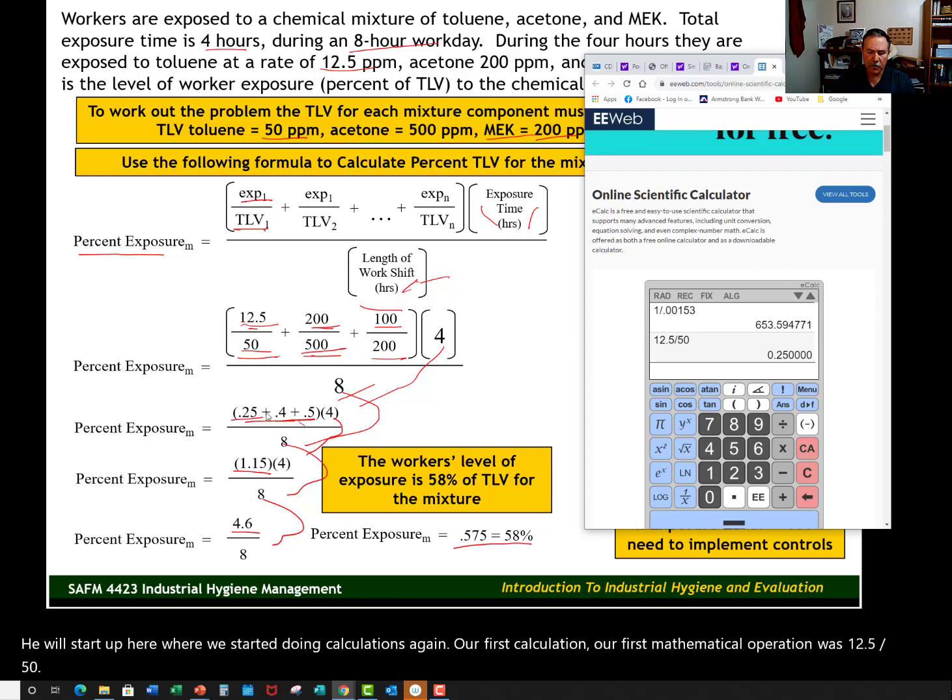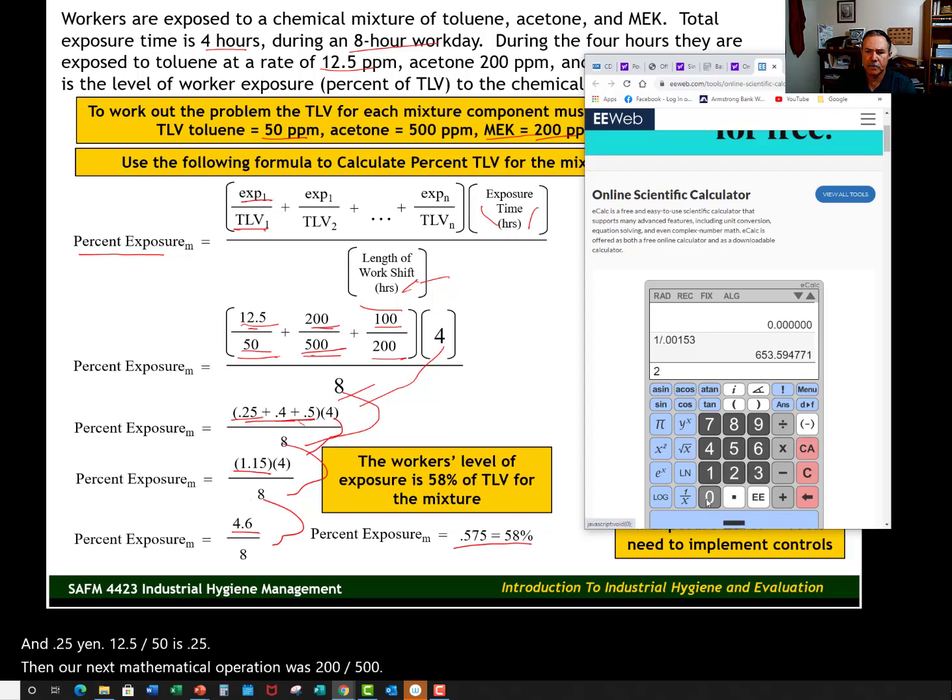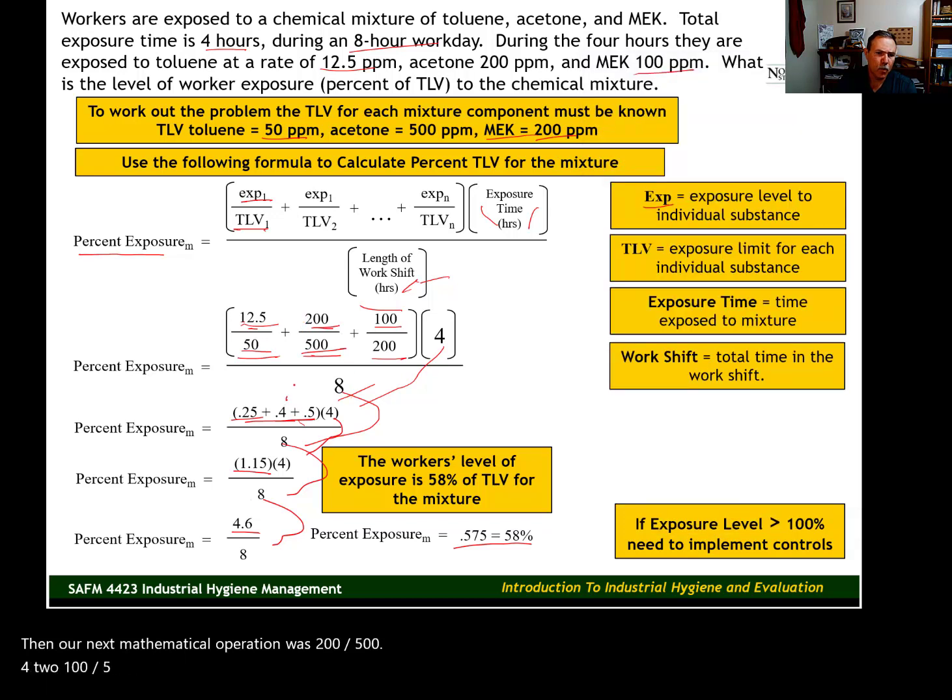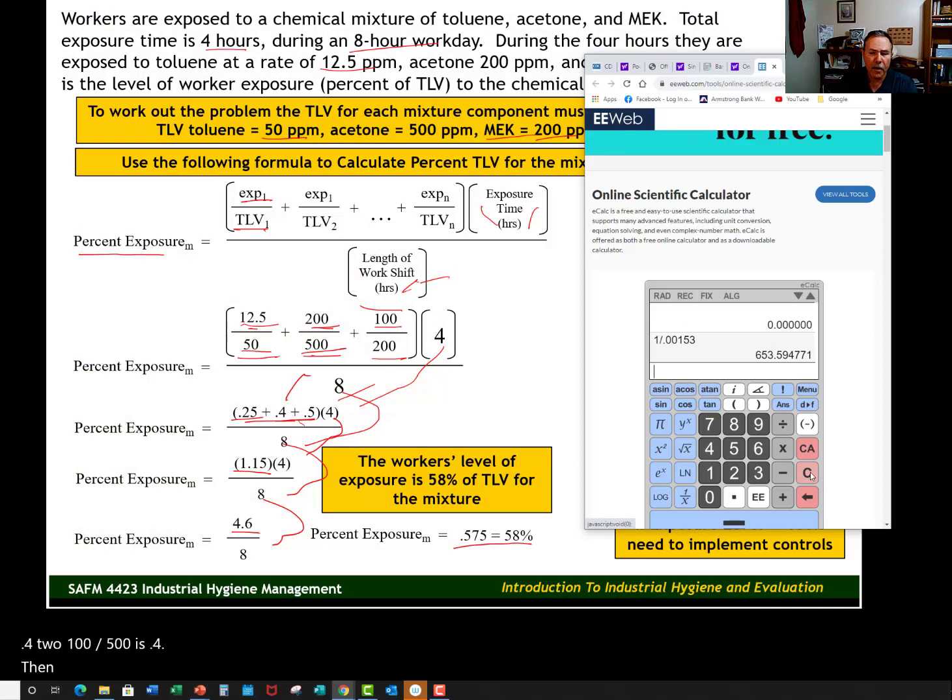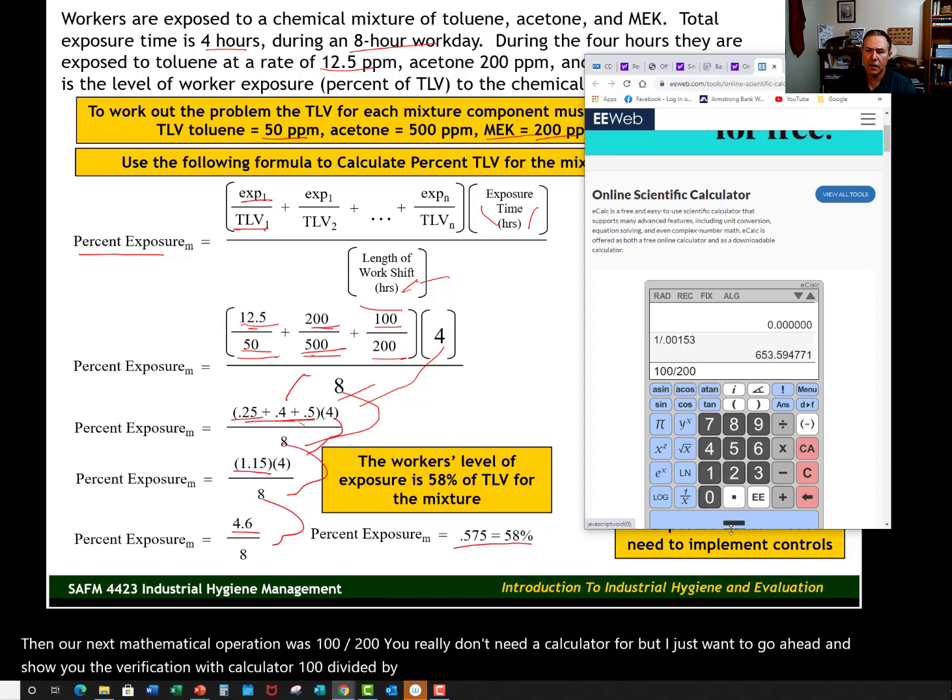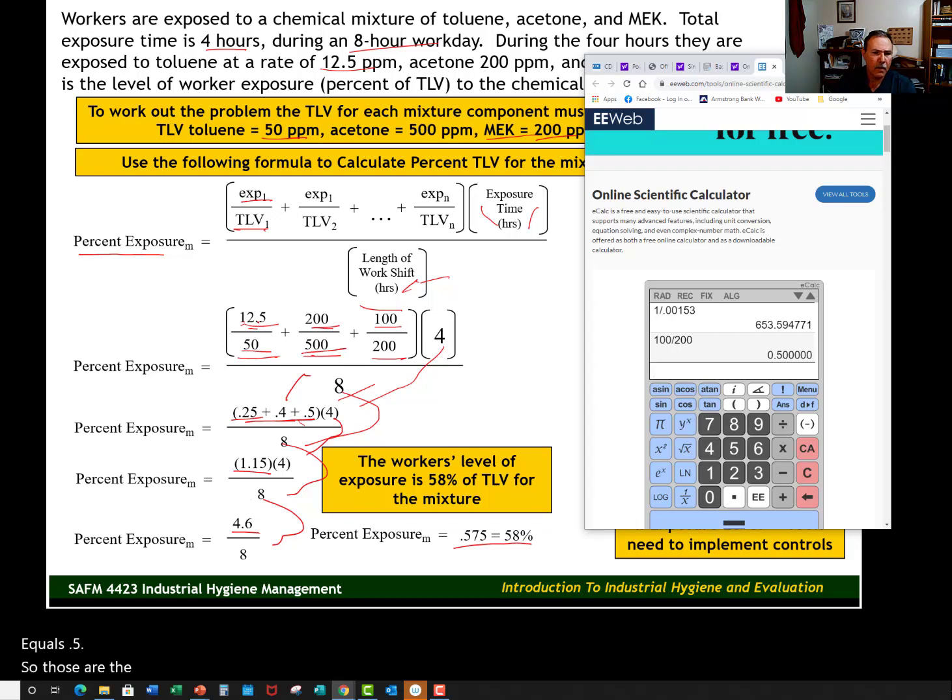12.5 divided by 50 is 0.25. Then our next mathematical operation was 200 divided by 500—you really don't need a calculator for that, but I just want to show you the verification with calculator. 100 divided by 200 equals 0.5. So those are the verified calculations for this part of the formula.